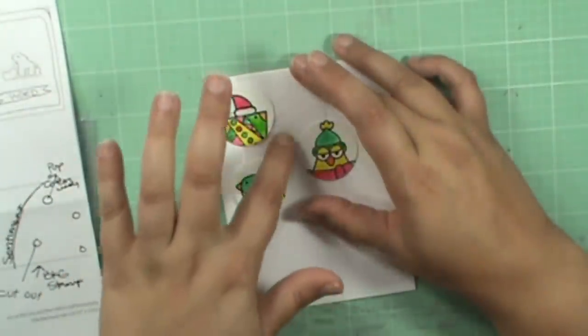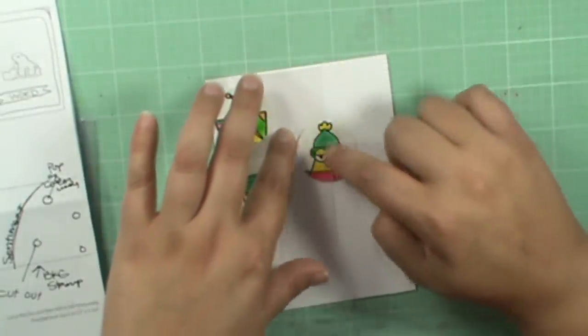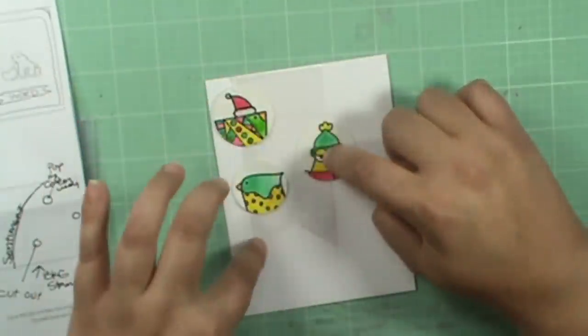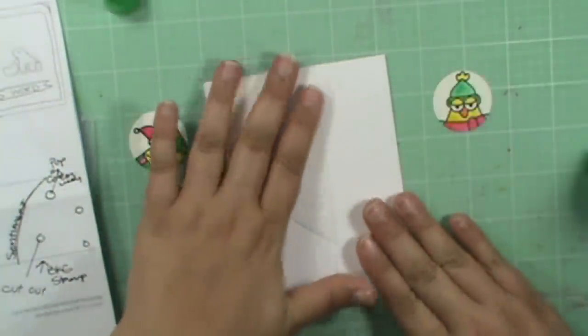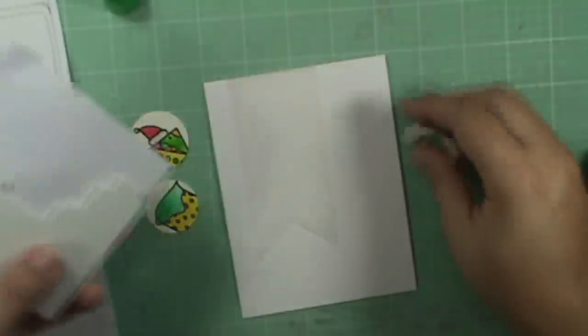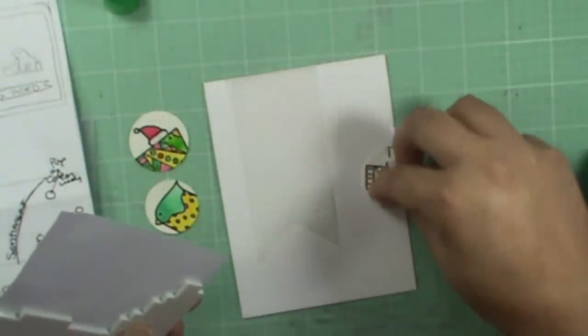Now I know where these pieces are going to be, so I'm going to strategically place adhesive underneath where my circles are going to be on my vellum. Place that down and then take some foam adhesive and place it on the back of each one of these little circles.